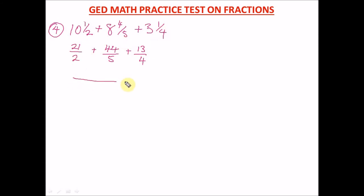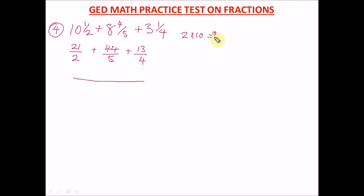Now find the LCM of 2, 5, and 4. Trying 2 times 5 gives 10, but 4 doesn't divide 10 evenly. Trying 5 times 4 gives 20. Does 2 go into 20? Yes — 2 times 10 is 20. So the least common multiple of 2, 5, and 4 is 20.